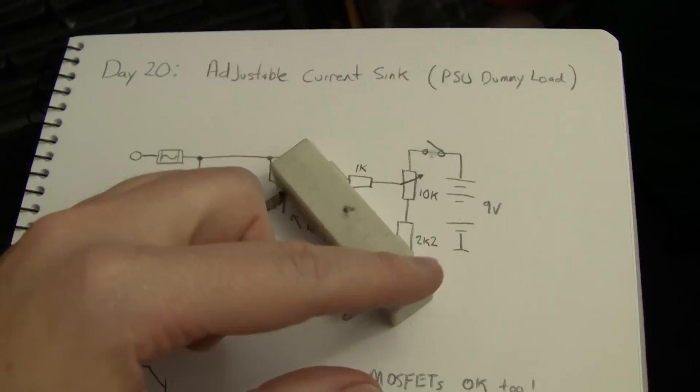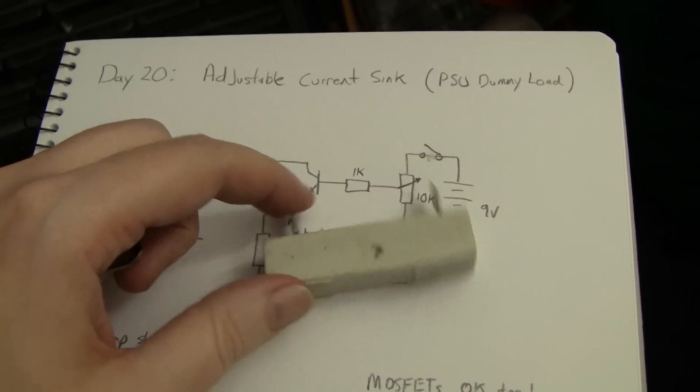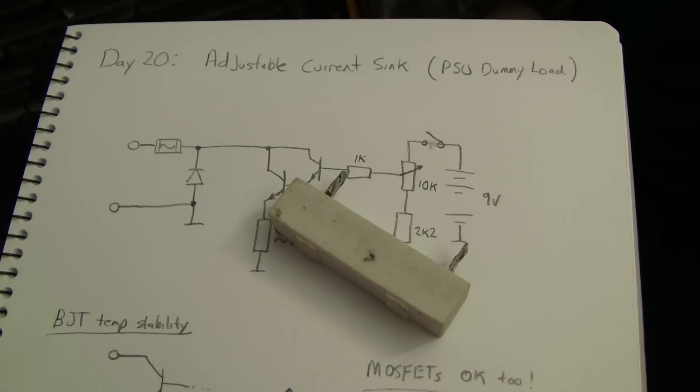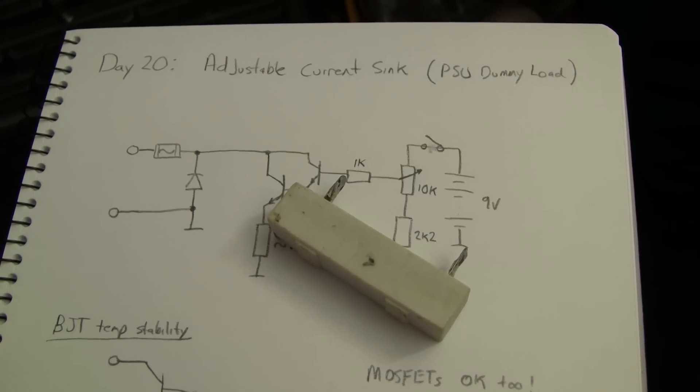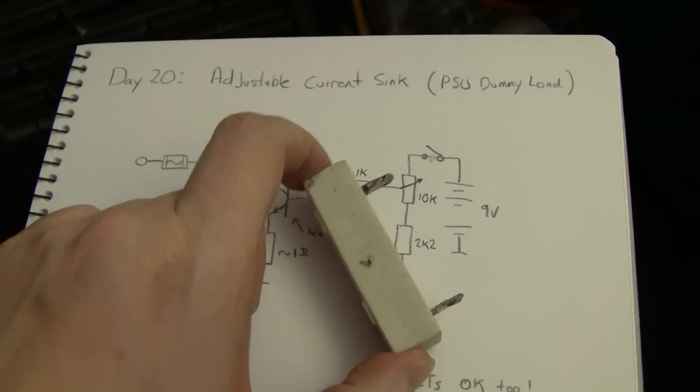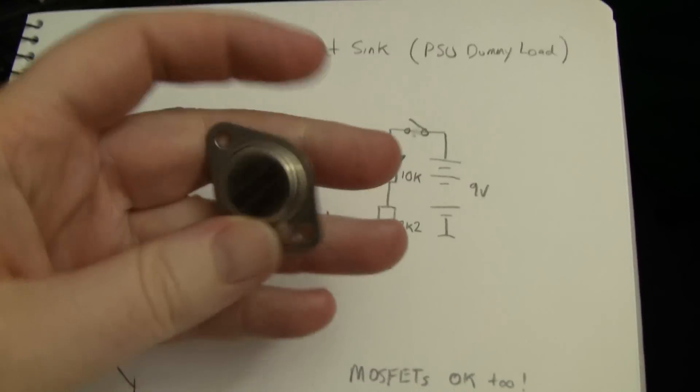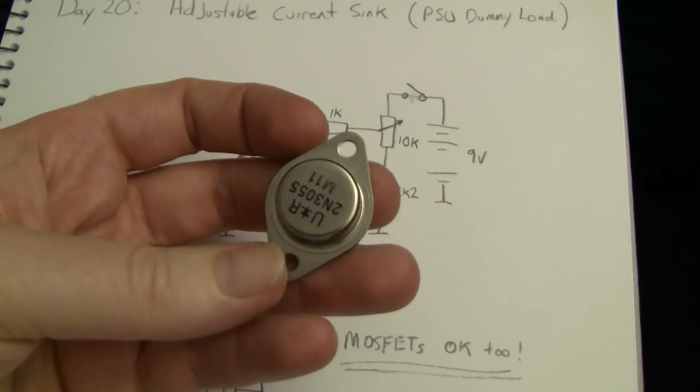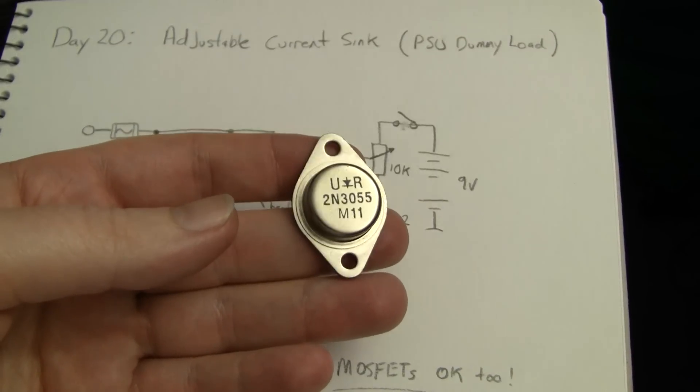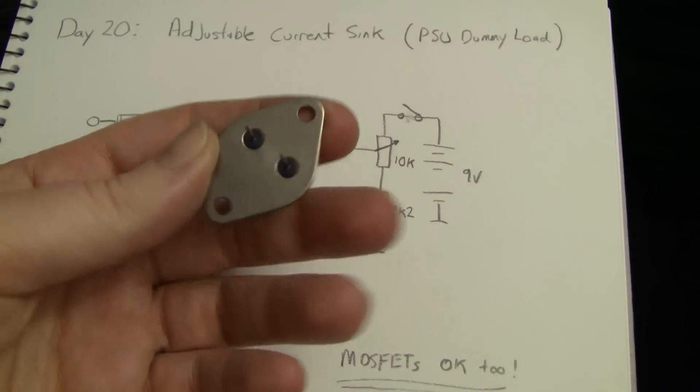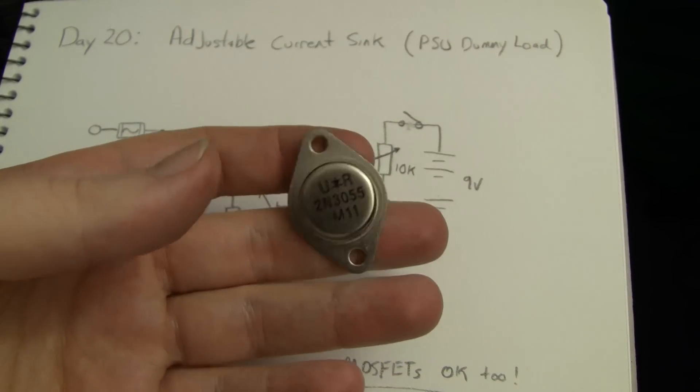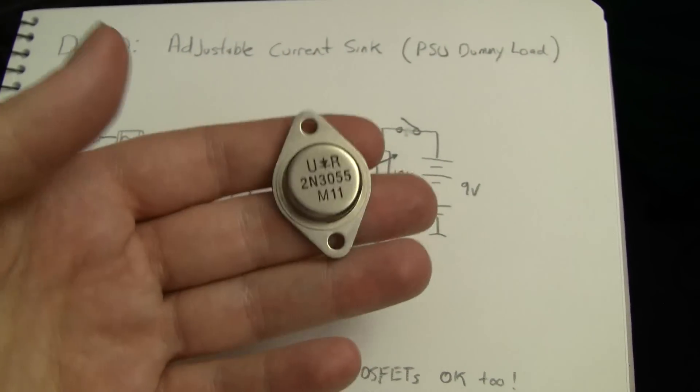There are alternatives using common off-the-shelf transistors. This is a 2N3055 which has a terrible beta but it's just about unkillable in a TO-3 package. You can bolt it down to a massive heat sink and dissipate a heck of a lot of power.